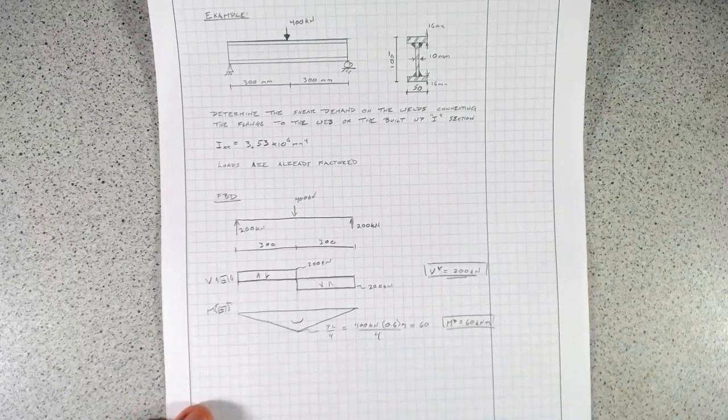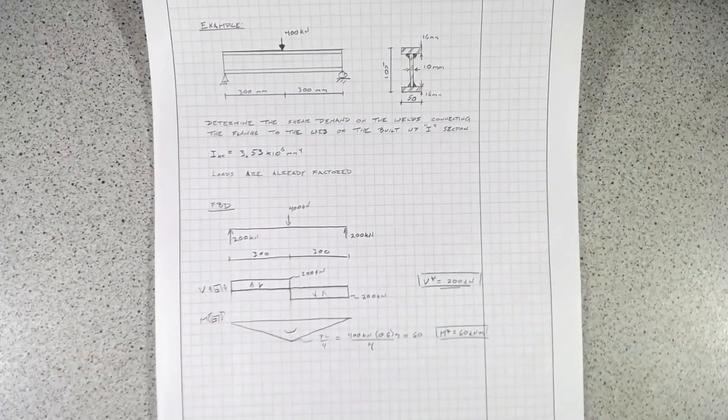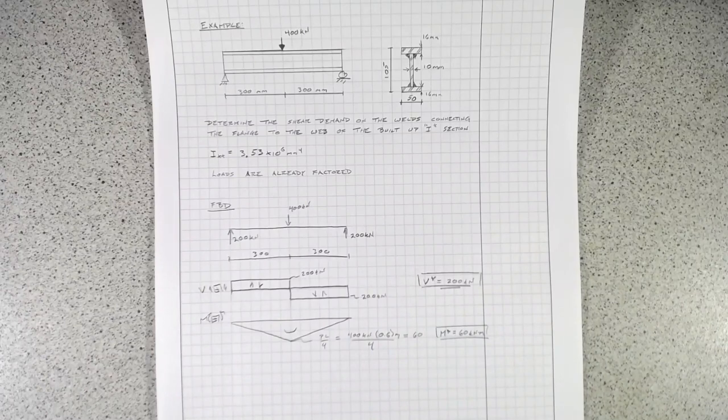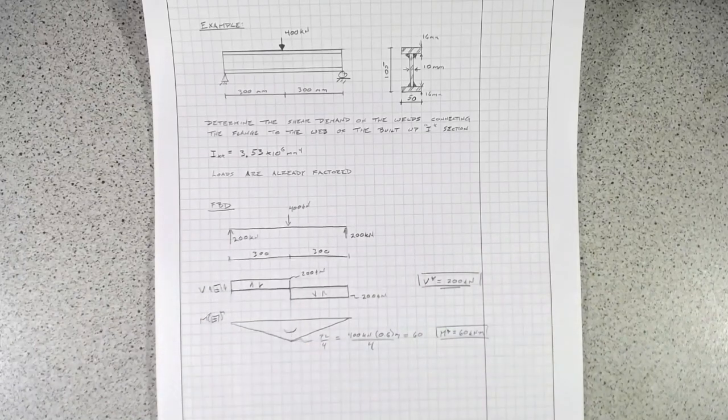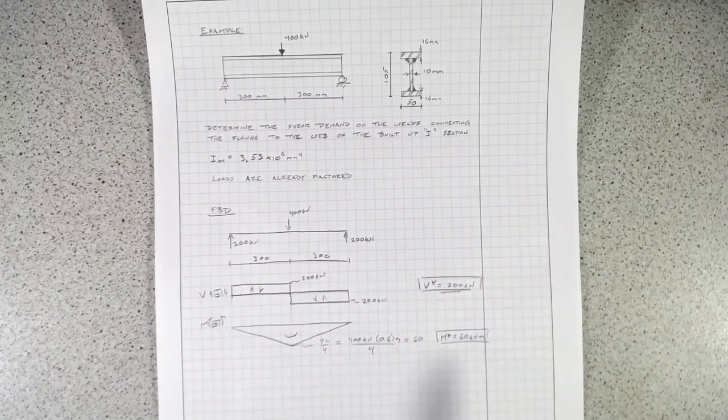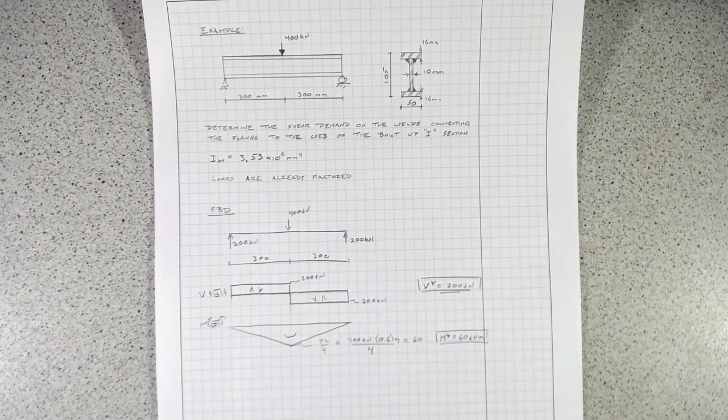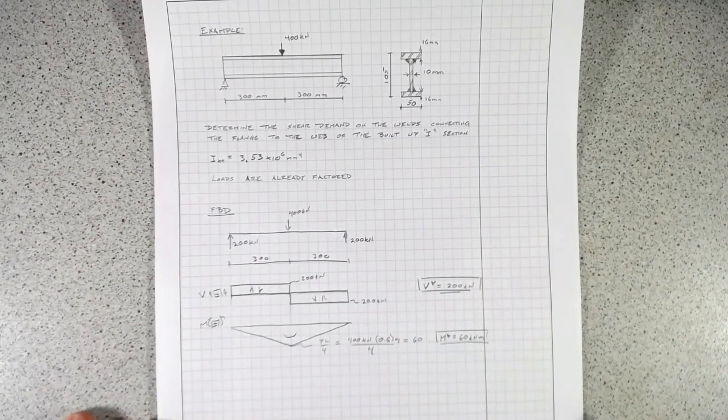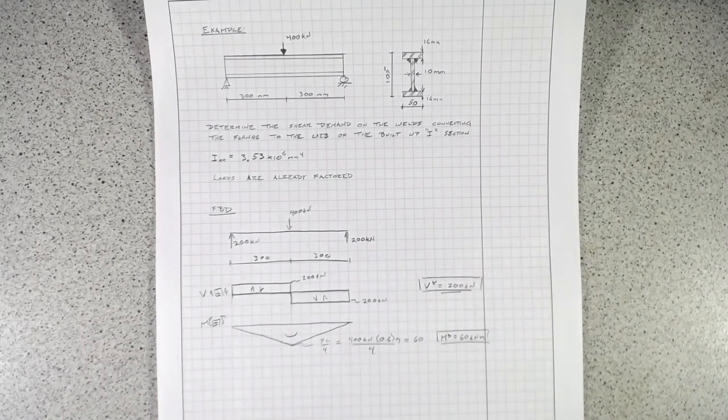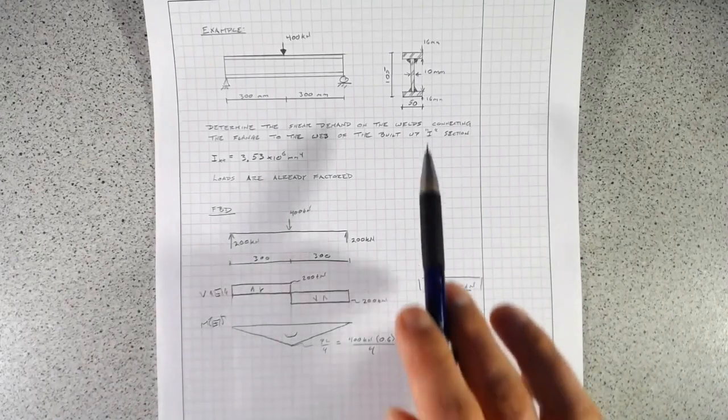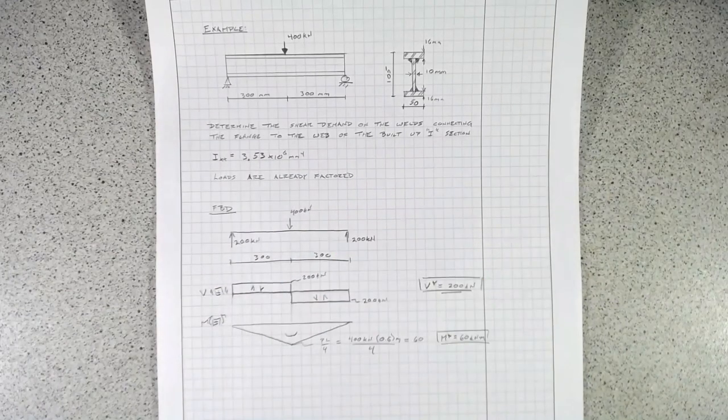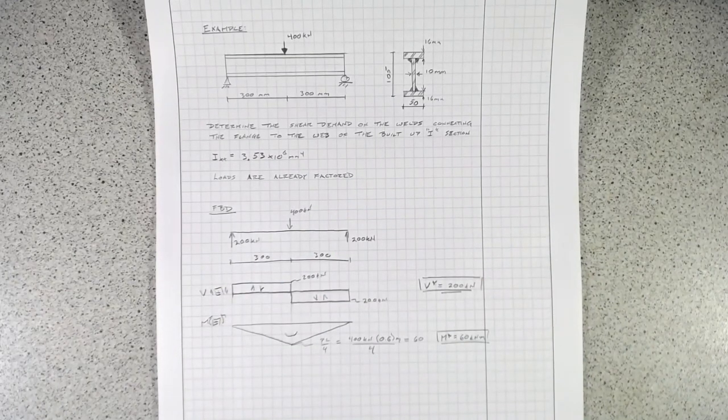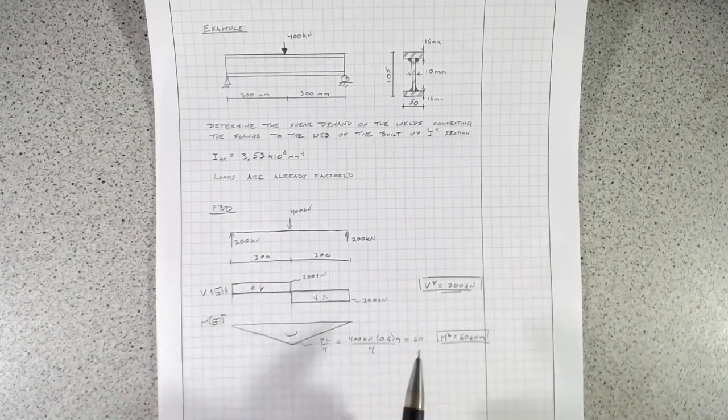As a brief aside, this is the type of member in which we would expect to see shear actually dominating the design. It's these really short span, really heavily loaded members. What I'm showing you here was actually used for a loading apparatus for testing pile foundations. We needed a cross beam, something short and stocky, and the only way to do that was this built-up section. While it seems like a cooked-up example, this is fairly realistic in certain applications.